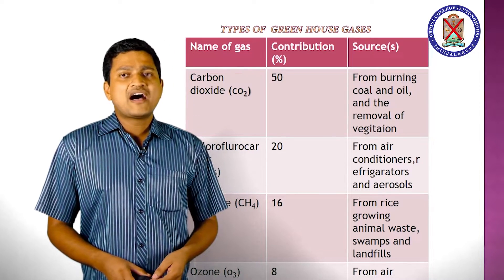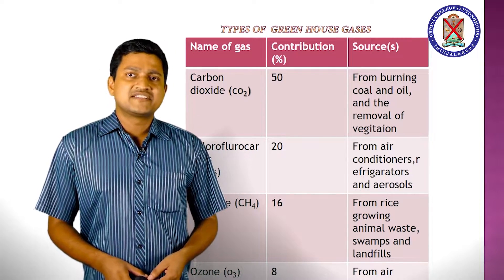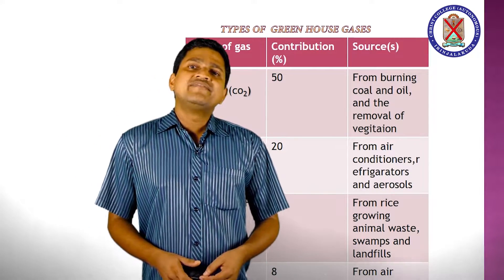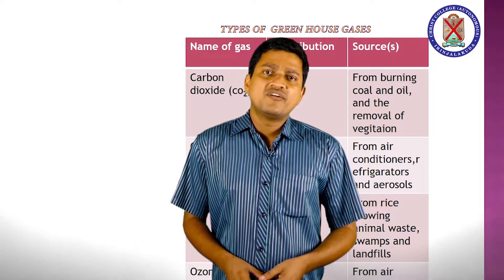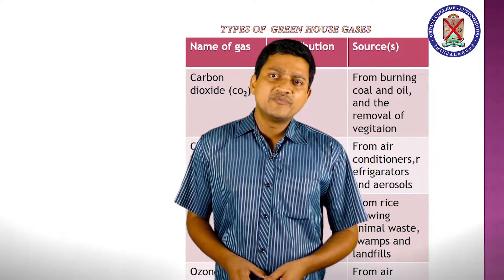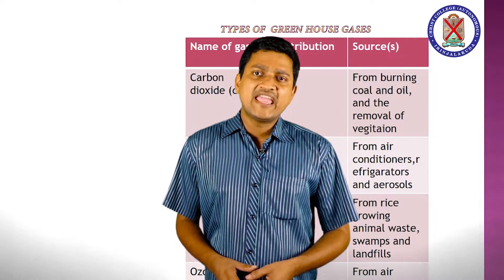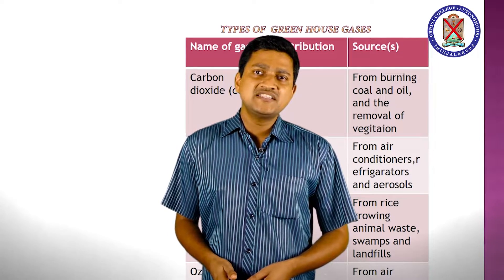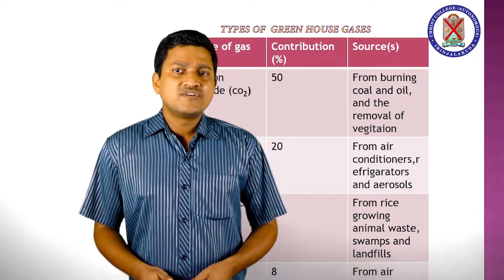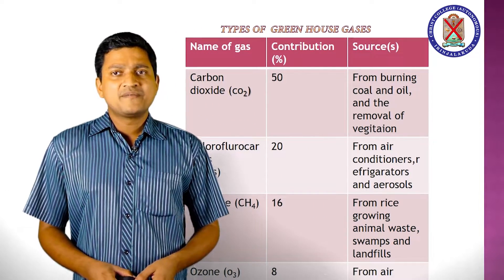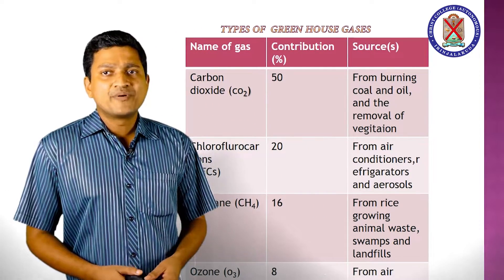Other sources of methane include swamps and landfills. The fourth greenhouse gas is ozone, which has a contribution of only 8 percent. The main source of ozone at this level is from air pollution.